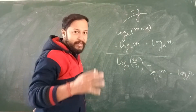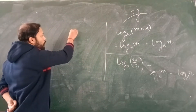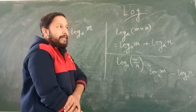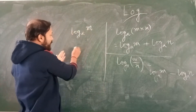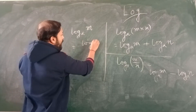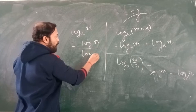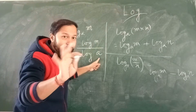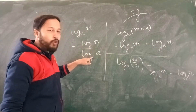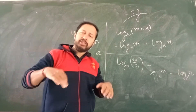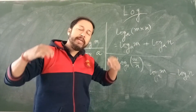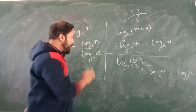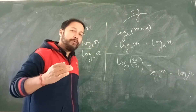The next formula: log of M to the base A can be written as log M divided by log A. Here A was the base, but in the rewritten form A is not the base — any base you can write. Say I am writing B as the base; then it is log M to base B divided by log A to base B. But the same base must be used in both numerator and denominator.